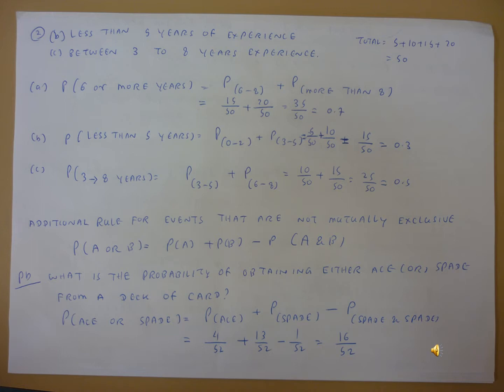That will be P(0 to 2) plus P(3 to 5), so 5 by 50 plus 10 by 50. We get 15 by 50, so 0.3. The less than 5 years experience wearers probability is 0.3.